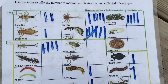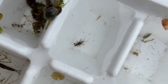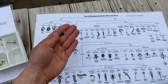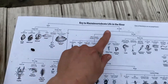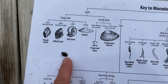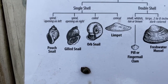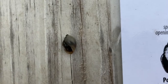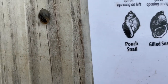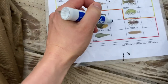This guy looks a lot like a mayfly but it's actually a stonefly. For our snails, we go through the key: shell — yes, a single shell. Then the key part is which way the spiral opens. My snail opens on the left, so it's a pouch snail.